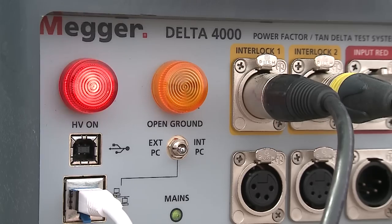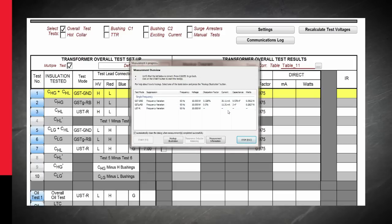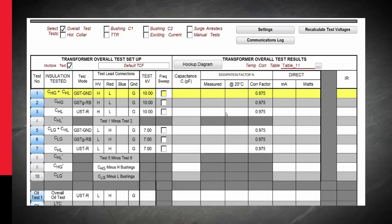Once interlocks are depressed, voltage is applied to winding and tests are executed. We can now observe testing as it is automatically completed, noting any unexpected results. We review the results and determine if they are acceptable.